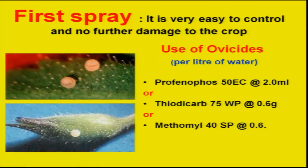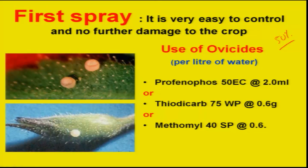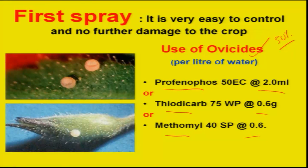As a first spray in case of pigeon pea: flowering normally starts after 60 days, and with onset of flowering, Helicoverpa or Maruca damage is seen — egg laying takes place with the commencement of flowering. That is why at 50 percent flowering, we must monitor egg population based on ETL. As a first spray, we can use insecticidal applications belonging to ovicides. Several ovicides have been listed with recommended dosages and can be applied as a first spray.